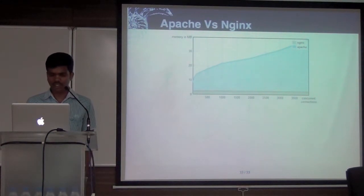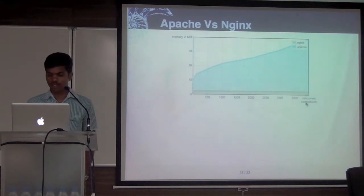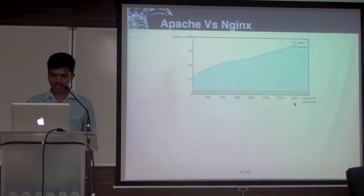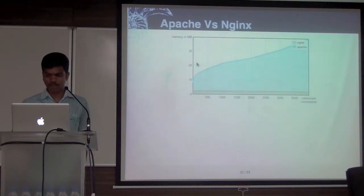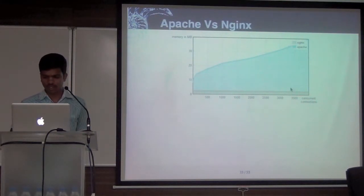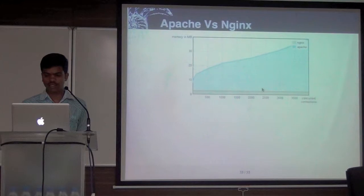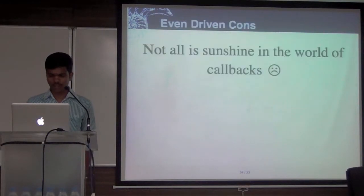This is a benchmark between Apache and Nginx — a really popular comparison. On the X axis we have number of connections, meaning we have a single Apache process and a single Nginx process, and we keep increasing requests. On the Y axis is the memory consumed by the process. You can see that Apache is taking more memory, but Nginx stays flat. Throughout the process, Nginx takes less memory. That's one thing that's cool with event-driven programming.